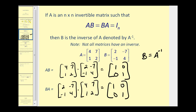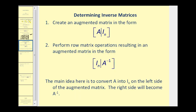Now we'll look at how we find the inverse of a given matrix using augmented matrices. We create an augmented matrix with matrix A on the left and the identity matrix on the right. We then perform row operations that will result in the identity matrix on the left, and the right side will become the inverse of matrix A.